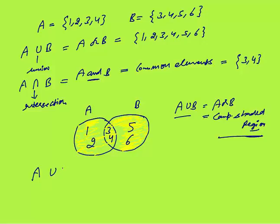Now, set A has elements 1 and 2. Elements 3 and 4 are the common elements in A and B. This side has 5 and 6. When I say A union B, it means the complete shaded region. So A union B contains 6 elements: 1, 2, 3, 4, 5, and 6.